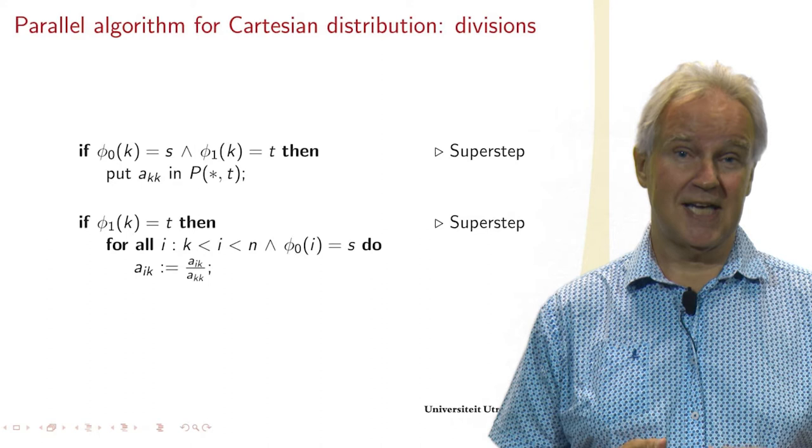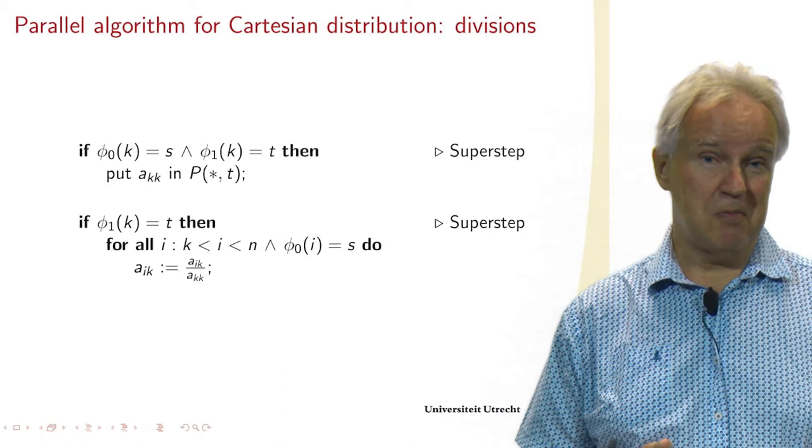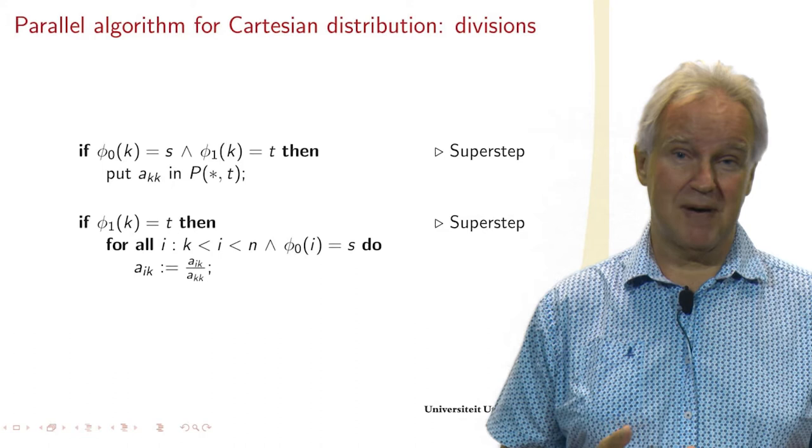We recognize that here in the second superstep. So we do for all the I between K and N which are mine, I do this division. And how do I express which are mine?